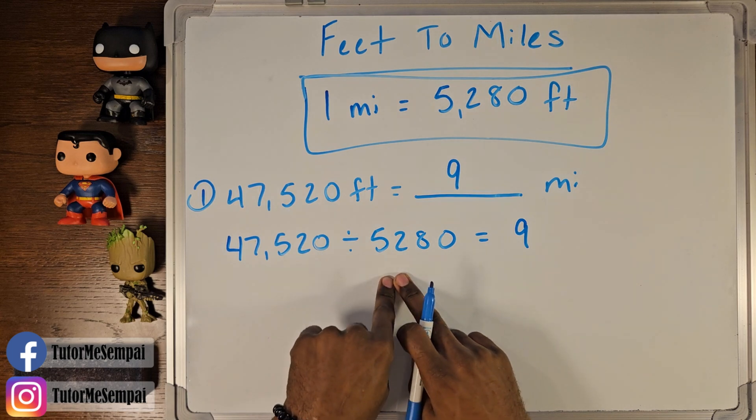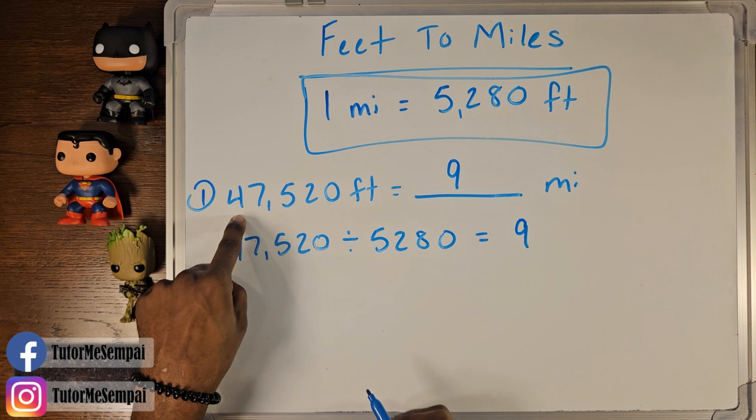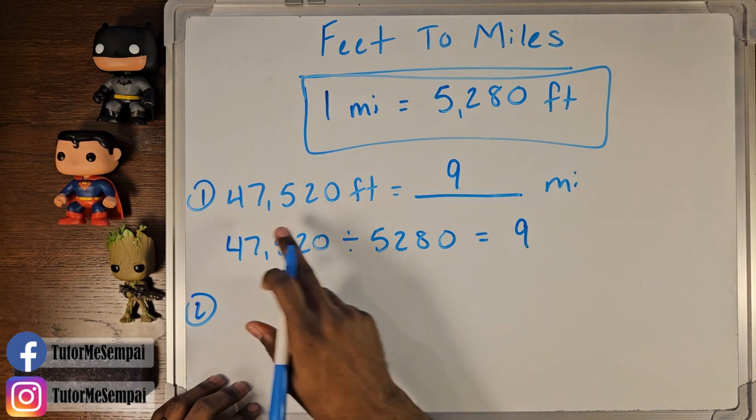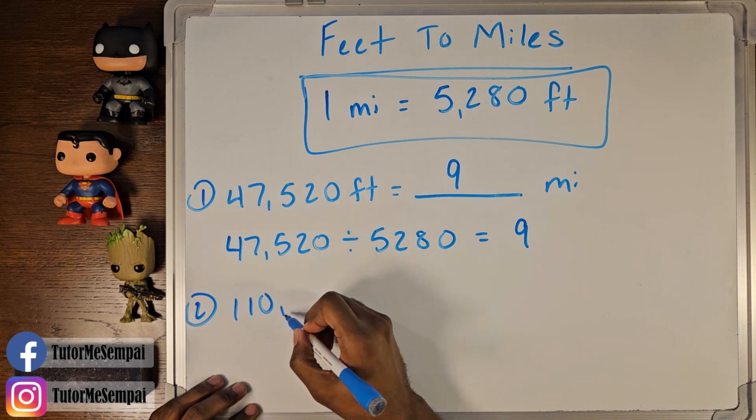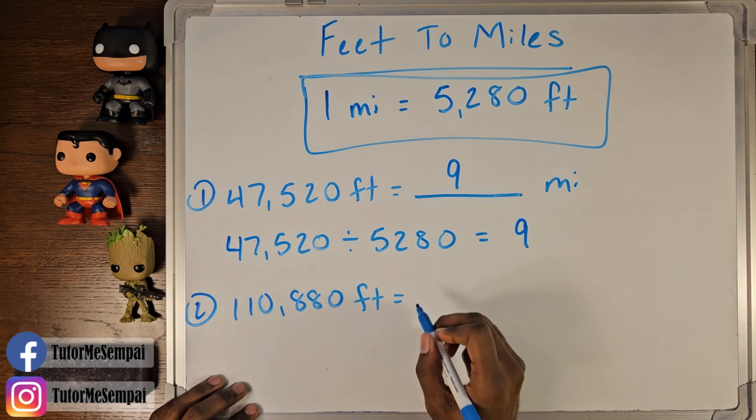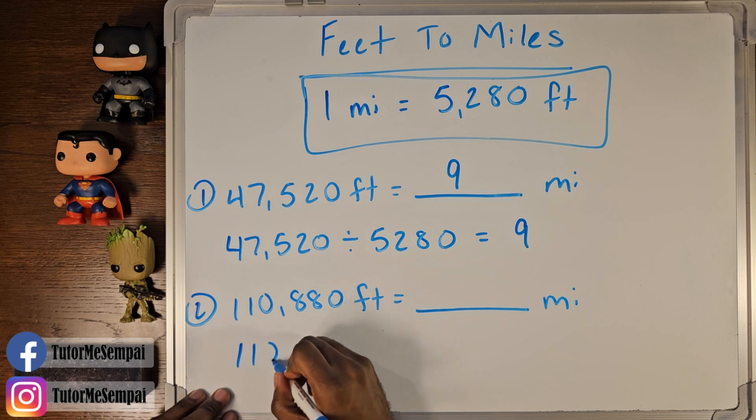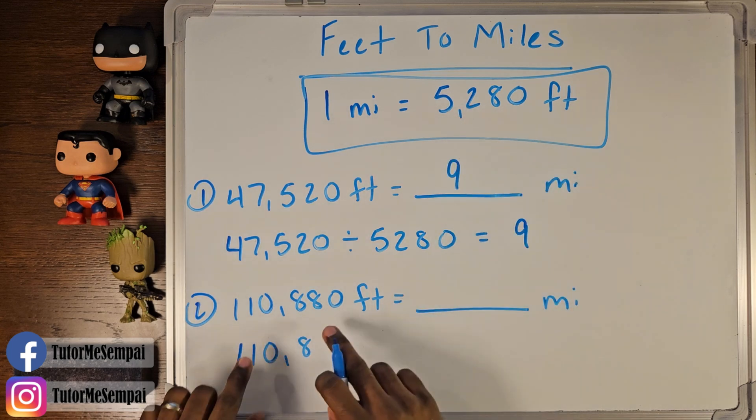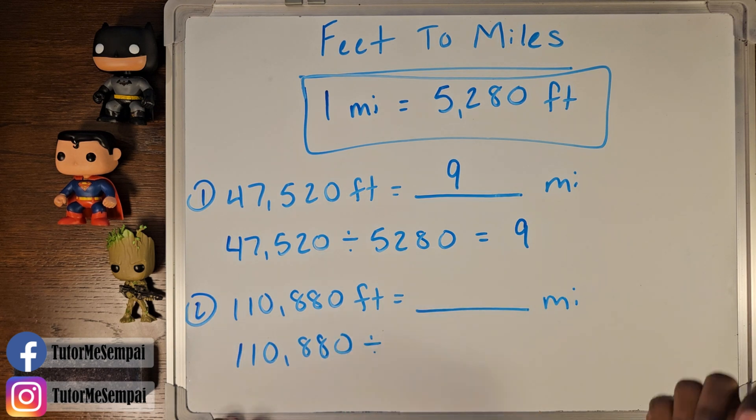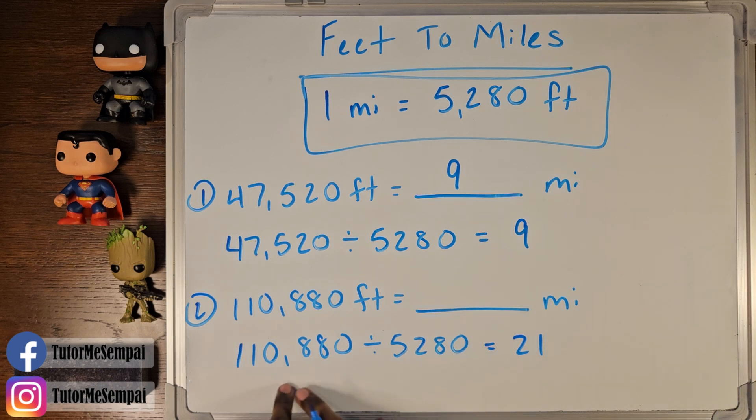Nine groups of 5,280 make up 47,520. So let's say we have a little bit more. We have more feet. Instead of 47,000, let's say we have instead 110,880 feet. So we have quite a bit more feet. How many miles do you think we're going to have when we have this many feet? We're going to do it the same exact way. So we're going to take that big number here. We want to figure out how many groups of 5,280 can we get out of this? So we have to divide, simple division, whether you do long division or you have a calculator, whatever you're going to do, you have to divide. And when you divide this, you're going to see you're going to get a whopping 21. 21 is what you get when you do this division, which means that this is going to be 21 miles.